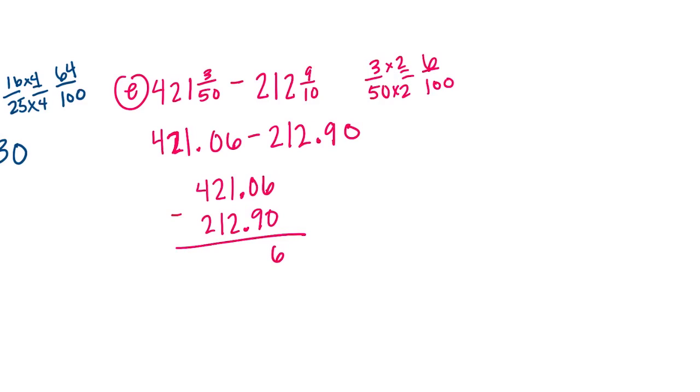6 minus 0 is 6. 0 minus 9 we can't do. 10 minus 9 is 1. Bring down the decimal point. 10 minus 2 is 8. 1 minus 1 is 0, and 4 minus 2 is 2. So 208 and 16 hundredths.